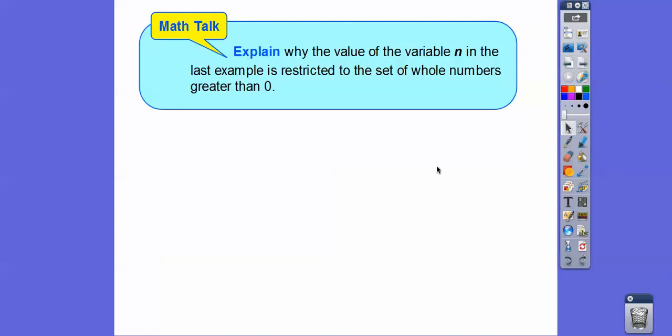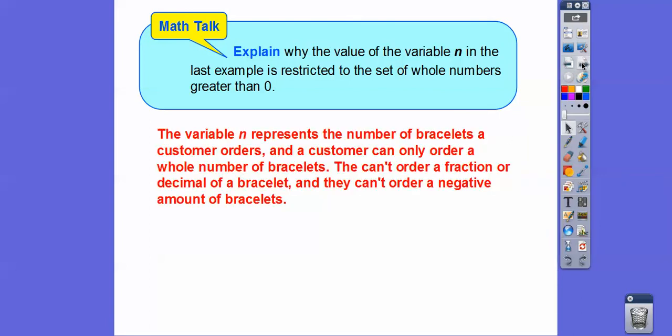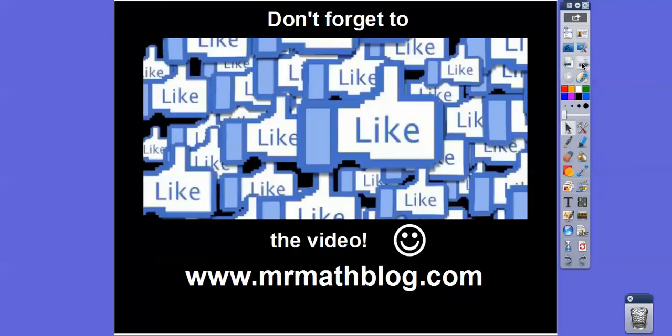Why is the value of the variable n restricted to the set of whole numbers greater than zero? The variable n represents the number of bracelets a customer orders. A customer can only order whole numbers of bracelets — they can't order a fraction or a decimal of a bracelet, and they can't order a negative number of bracelets. I hope that makes sense — you guys take care!